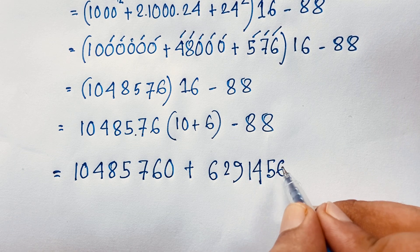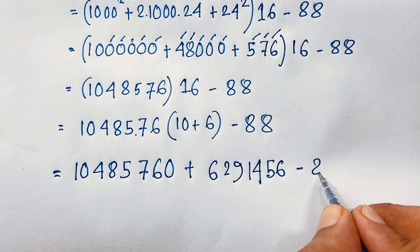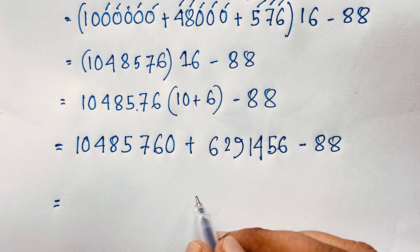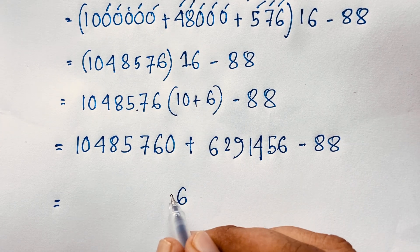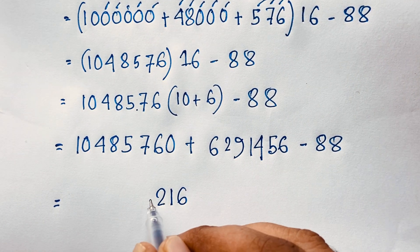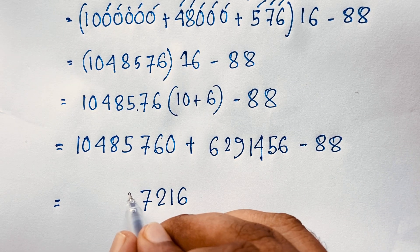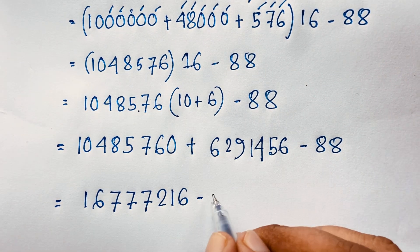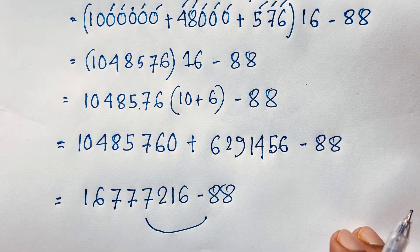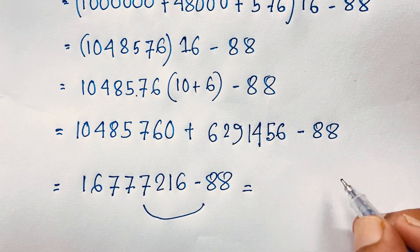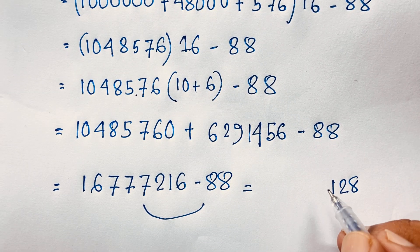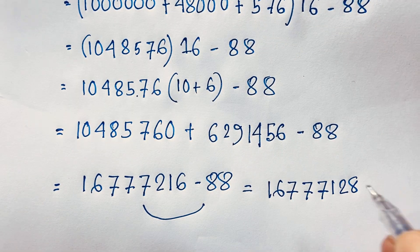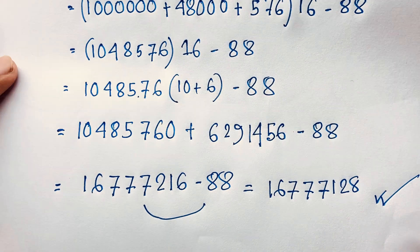And here is 6 times 1 it will be 6. So we will find out here is 6,291,456. Minus 88. Now this minus 88: 6,291,456 minus 88 it will be 6,291,368. This is our answer to this math Olympiad question.